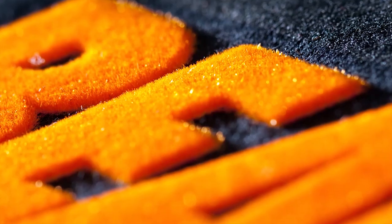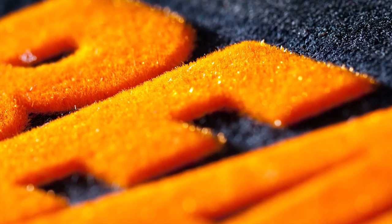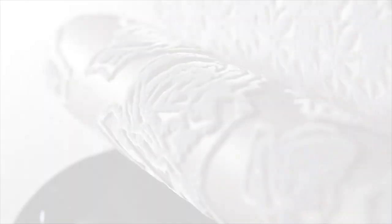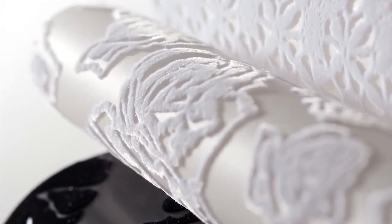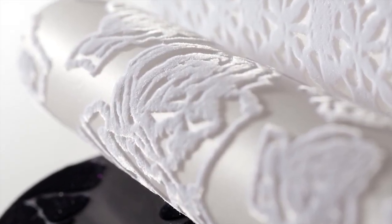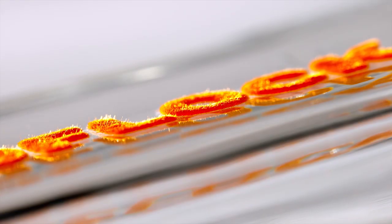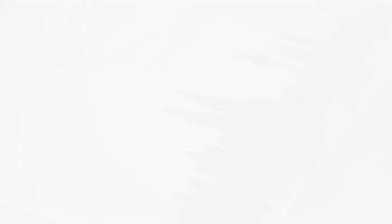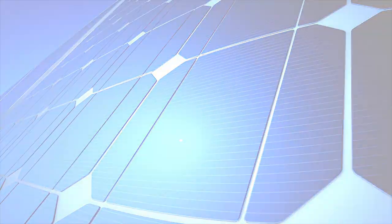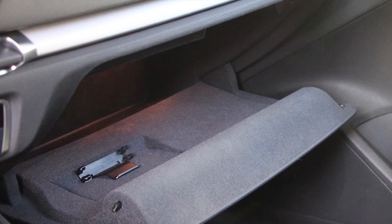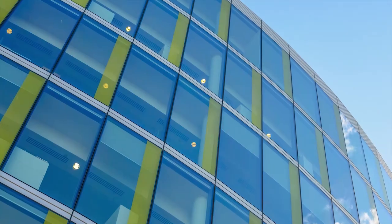Our flock adhesives form the base for applying flock fibers to a very wide range of substrate materials. Surfaces then take on a velvety or brush-like look and feel. Other examples where our products are used include the textile sector, as well as the electronics and automotive sectors. Our products are also found in the decorative finishing of architectural glass, and much more.